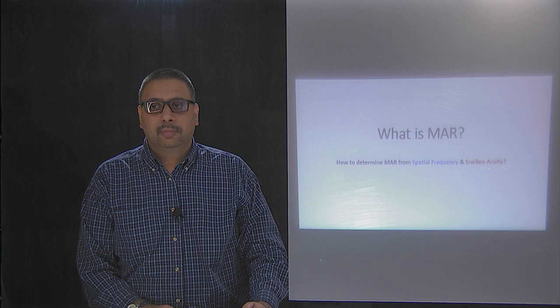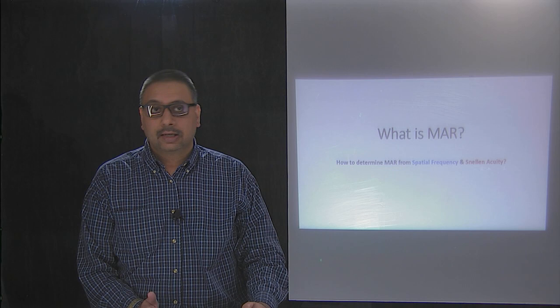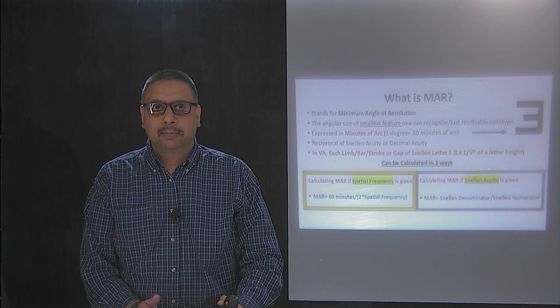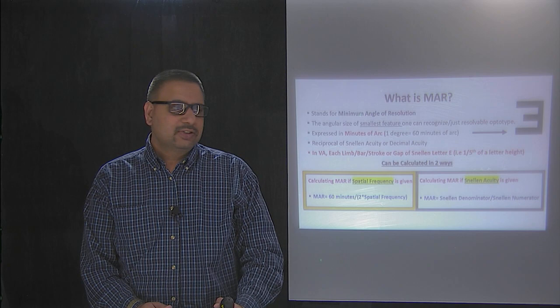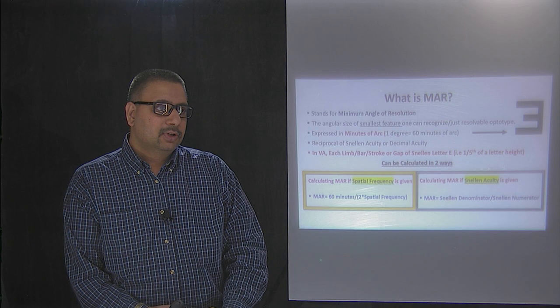Today we are going to review the minimum angle of resolution, which is often called MAR. The goal is to determine MAR if spatial frequency is given and Snellen acuity is given. Generally speaking, MAR stands for minimum angle of resolution and it is essentially the smallest feature that you can recognize in a letter or an optotype in an eye chart or a vision chart.